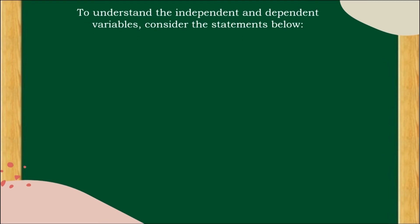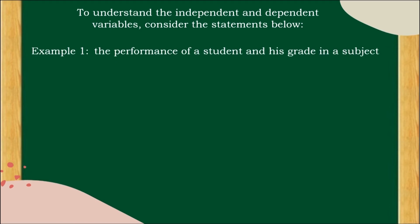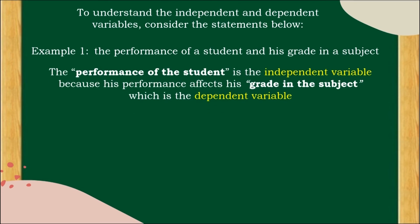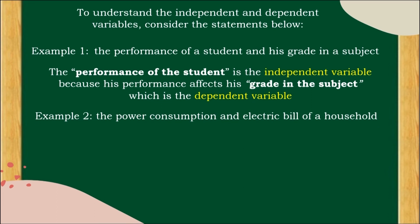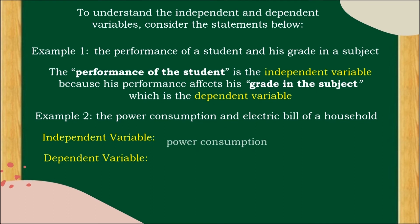To understand independent and dependent variables, consider these examples. Example 1: the performance of a student and his grade. The performance of the student is the independent variable because his performance affects his grade in the subject, which is the dependent variable. Example 2: the power consumption and electric bill of a household. The independent variable is power consumption and the dependent variable is the electric bill, because the electric bill depends on the power consumption.